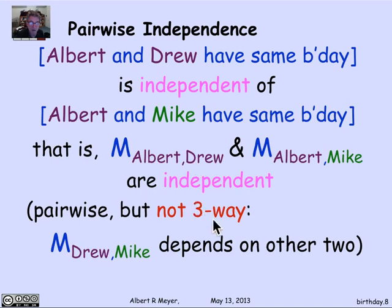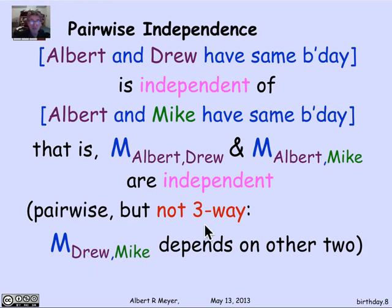Notice that these pairwise matching events are certainly not three-way independent. If I know that Albert and Drew have the same birthday and that Albert and Mike have the same birthday, I know with certainty that Drew and Mike have the same birthday. So this is a very nice basic example where you have pairwise independence but not three-way independence, assuming Albert, Drew, and Mike all have uniform birthday distributions.